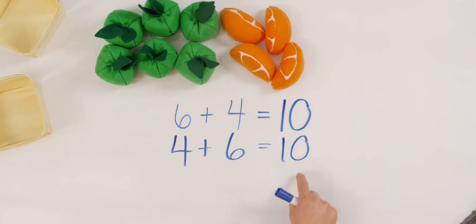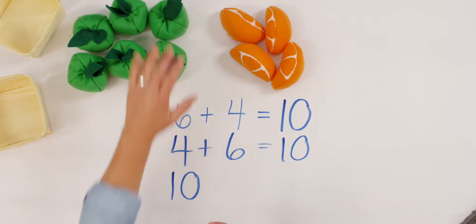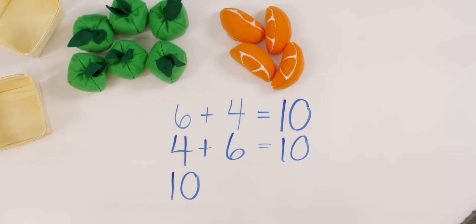How many do we have all together? Yes, ten. You can count that or you can even look here. Remember, I had ten fruits sitting on my table. How many did my kids come and eat the first time? Yes, they ate all my apples. How many apples are there? Six. So we take away six.